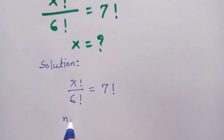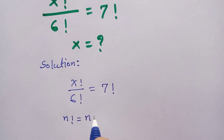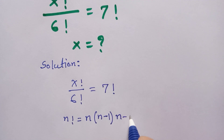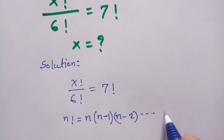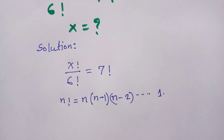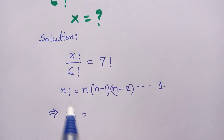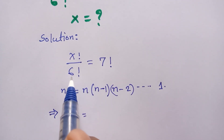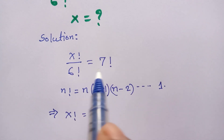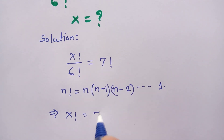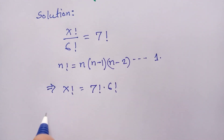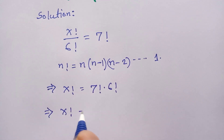We know n factorial is equal to n times (n minus 1) times (n minus 2) up to 1. We can write: x factorial is equal to — if we do cross multiply, this 6 factorial moves to the right side — so it will be 7 factorial times 6 factorial.